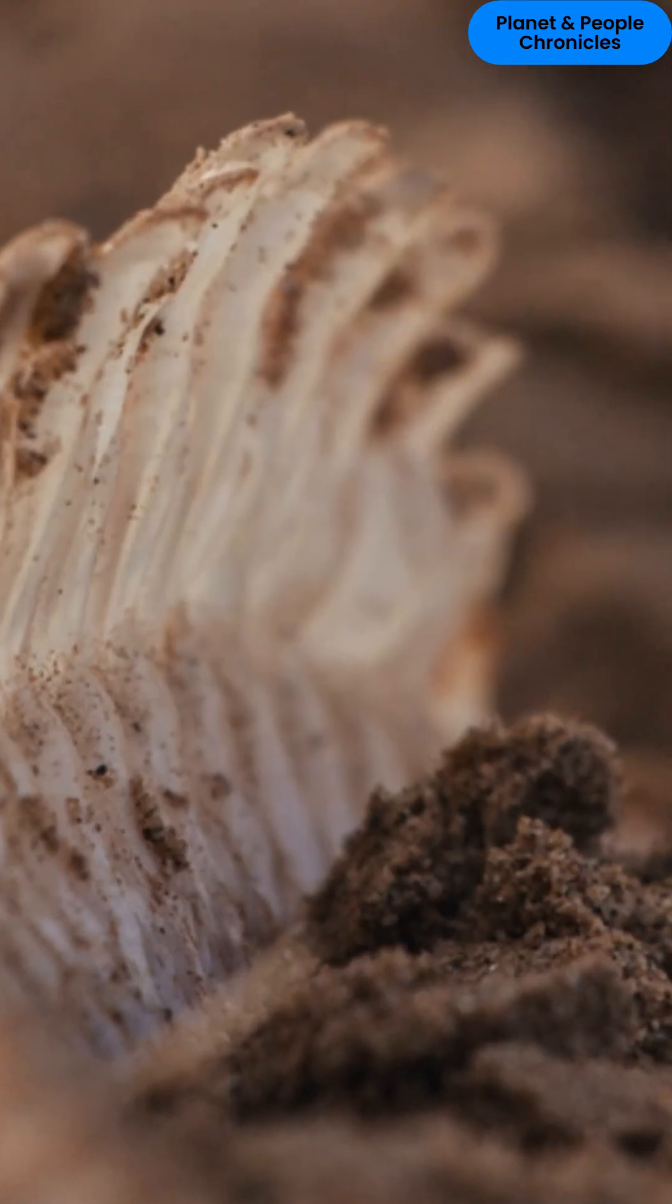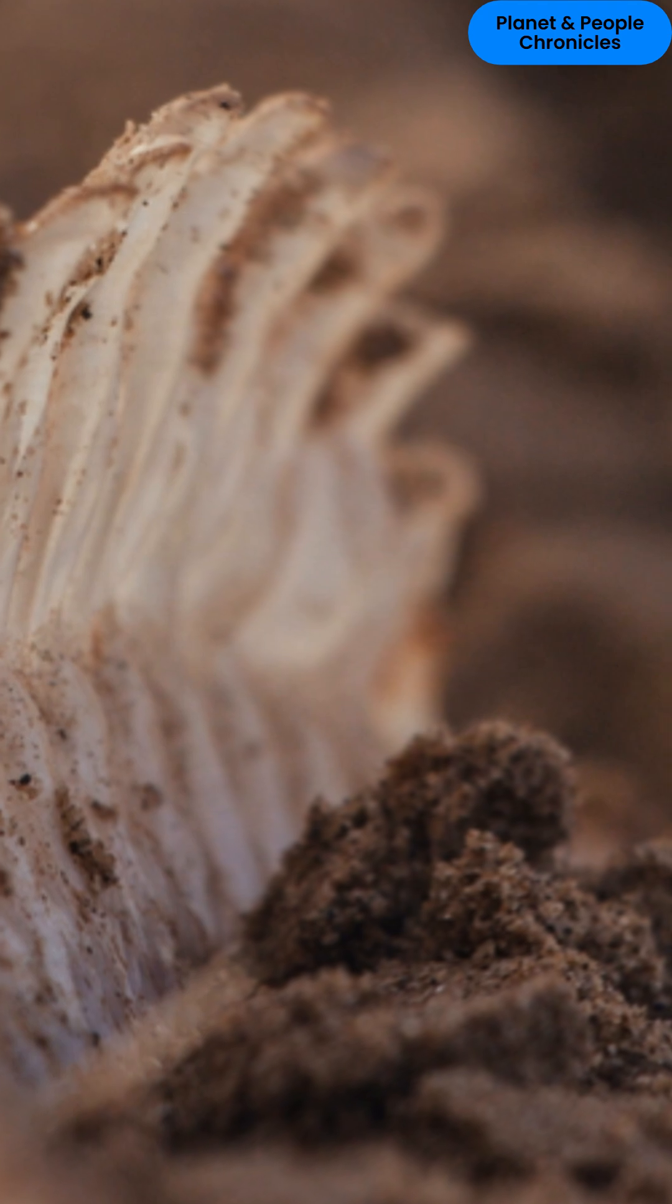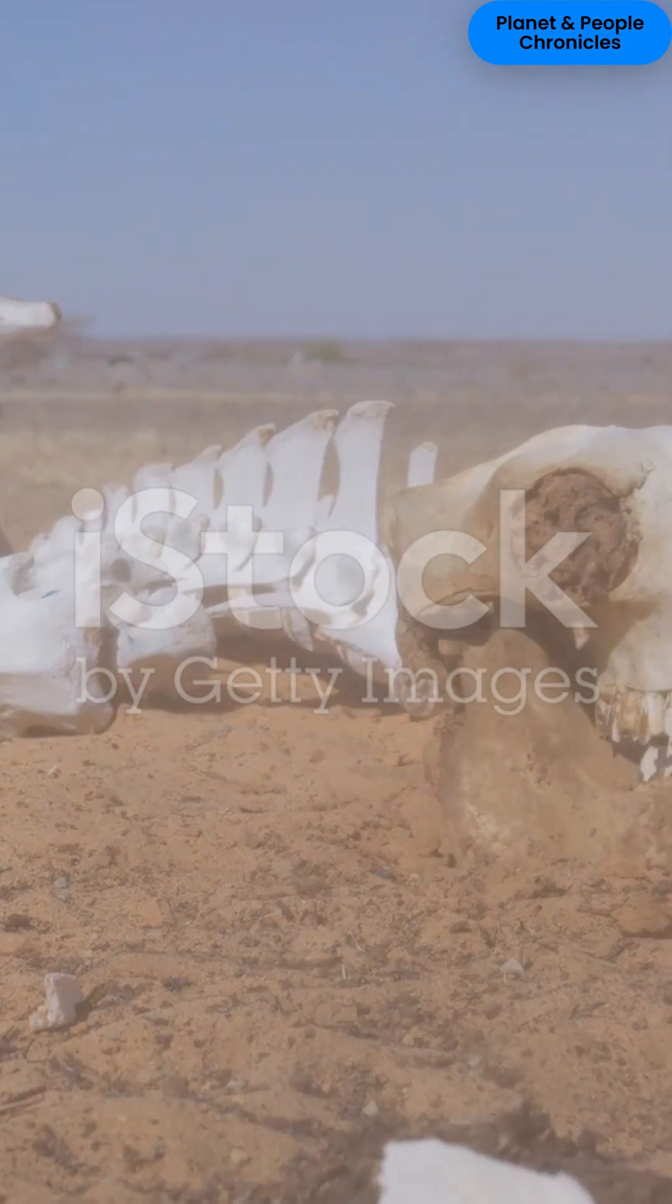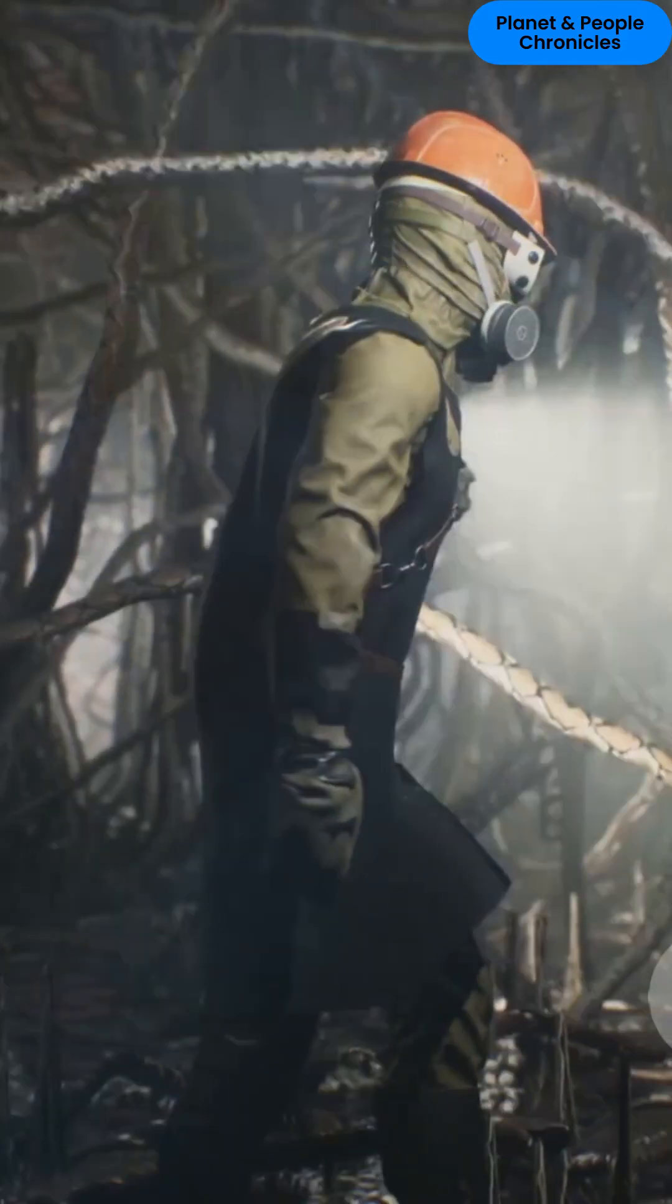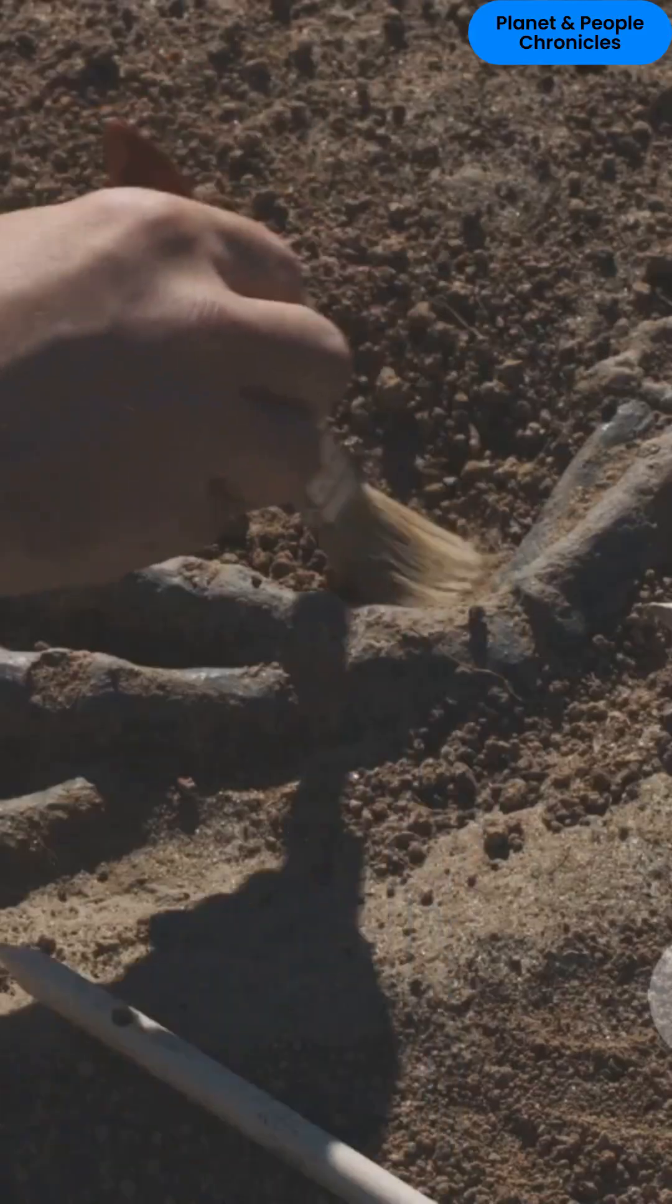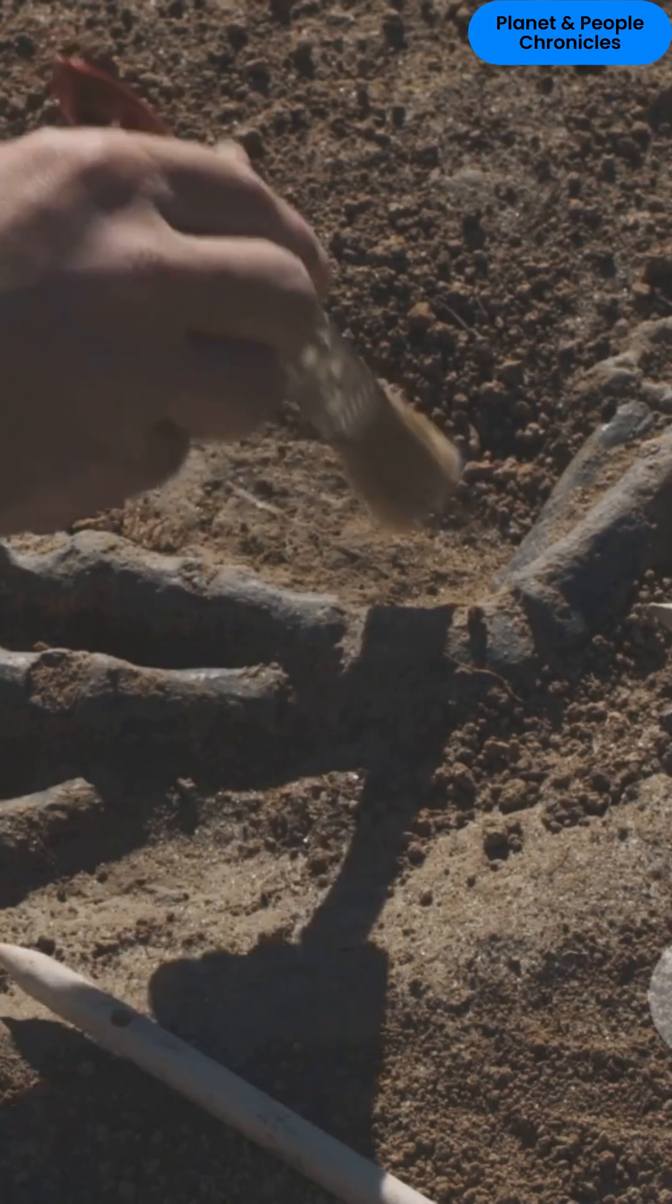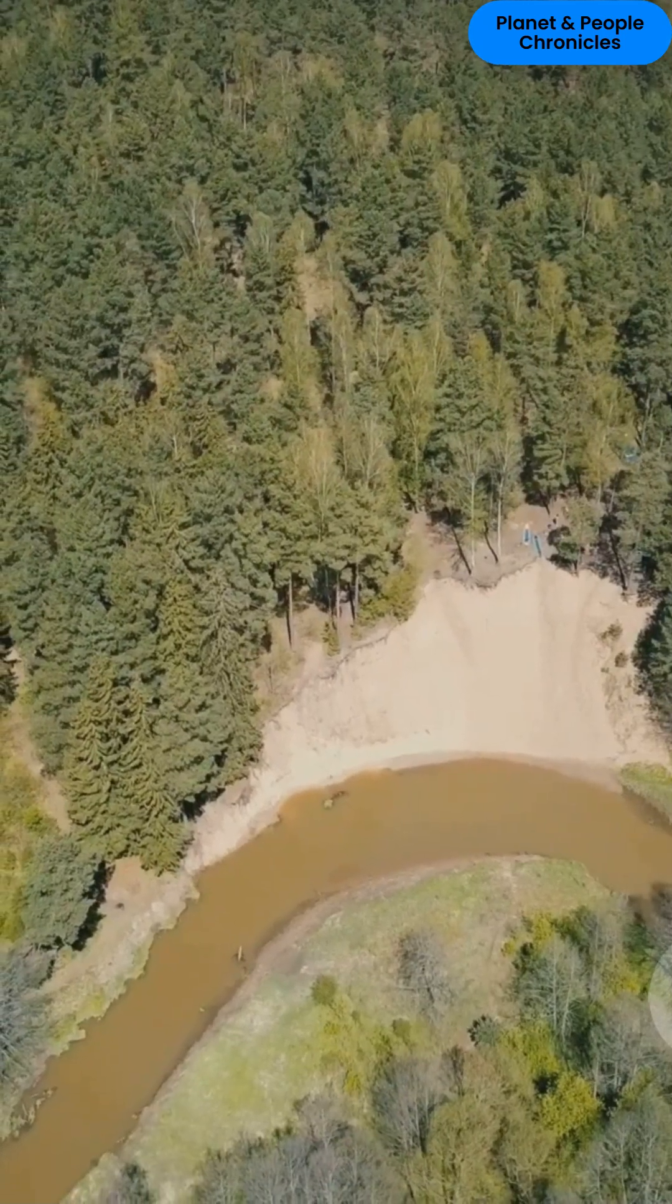Even tiny pollen grains tell us how forests migrated with the changing climate. From the Sahara's ancient whale fossils to frozen mammoths in Siberian ice, the Earth hides reminders of a time when climates were wild, and survival meant transformation.